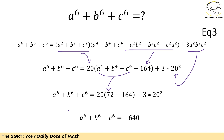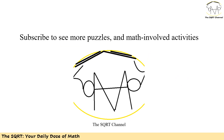Finally, putting everything together based on identity 3 and simplifying, the answer is negative 640. Note that if a, b, and c were real numbers, a to the power of 6 plus b to the power of 6 plus c to the power of 6 should be positive — but since a, b and c are complex numbers, this negative value is acceptable. Thanks for watching. If you'd like to see more math problems from competitions and Olympiads, please subscribe to the SQRT channel.